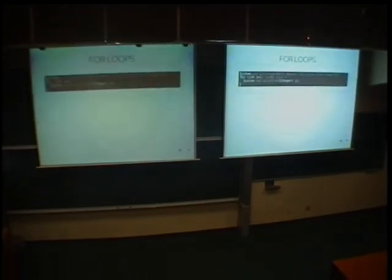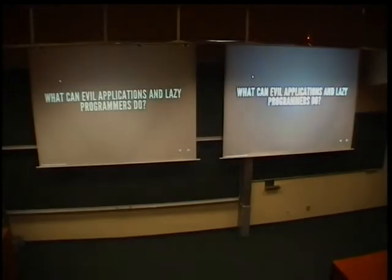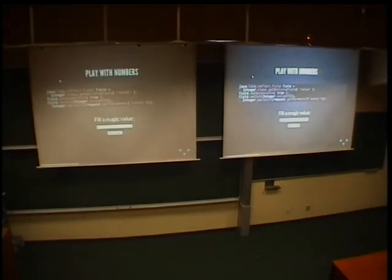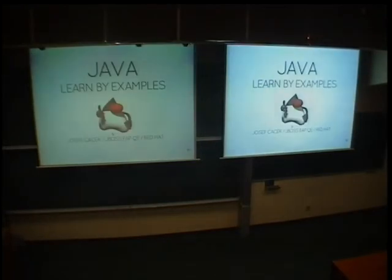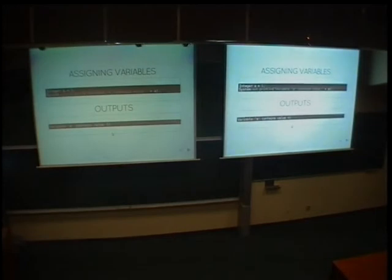It shows how to assign variables, and the GSP site generates output which usually goes to system out — so variable A is one, for example. The second Java example is a simple integer loop which outputs nice data. But what if an evil programmer or evil application comes along and, in another application running on the application server, submits some value? We go back to our e-learning application, reload it, assign variable A — and variable A is now 42.